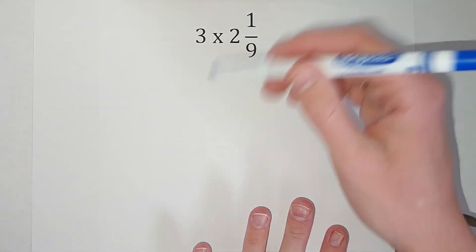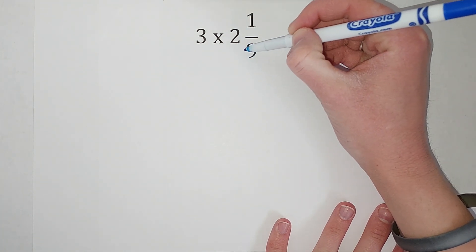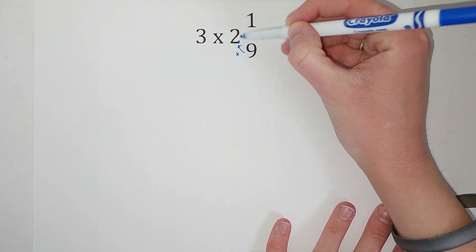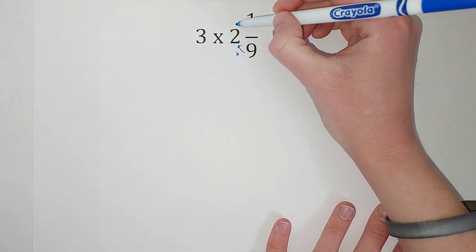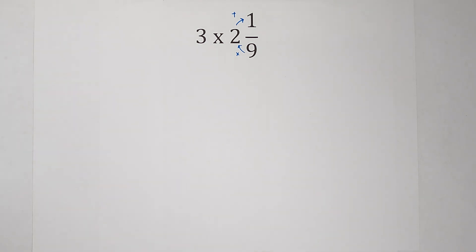So to do that, I will do it here, but I'll also link another example in the corner if you need it. I take my denominator and multiply it by the big number. So 9 times 2 gives me 18, and then we add the numerator, so 19.